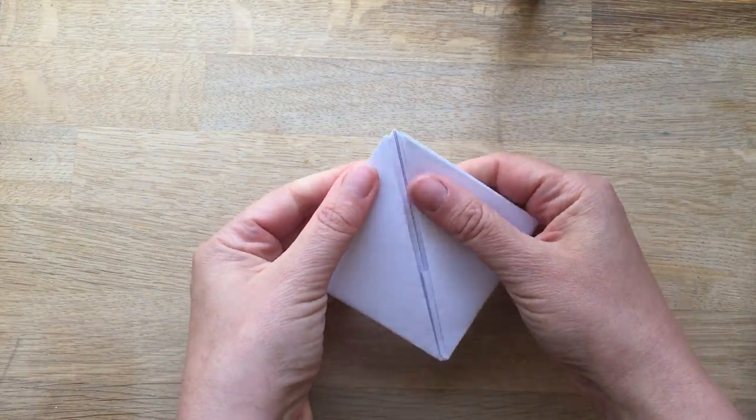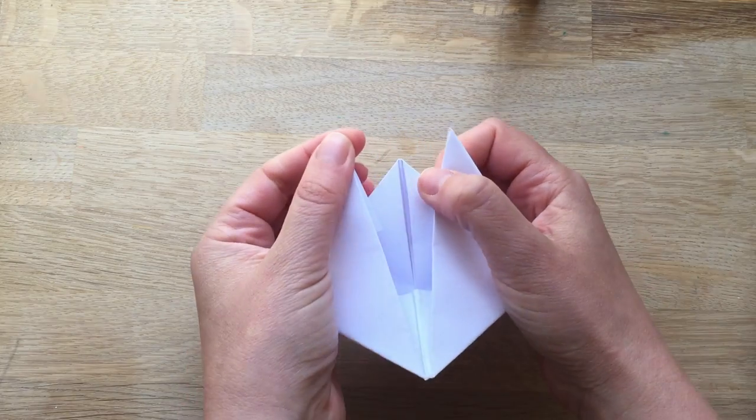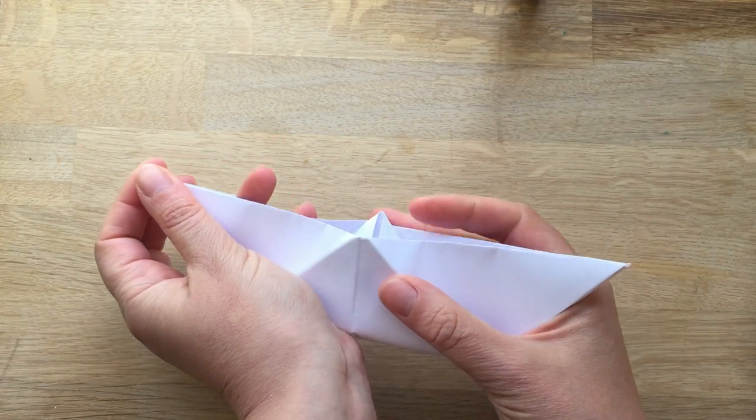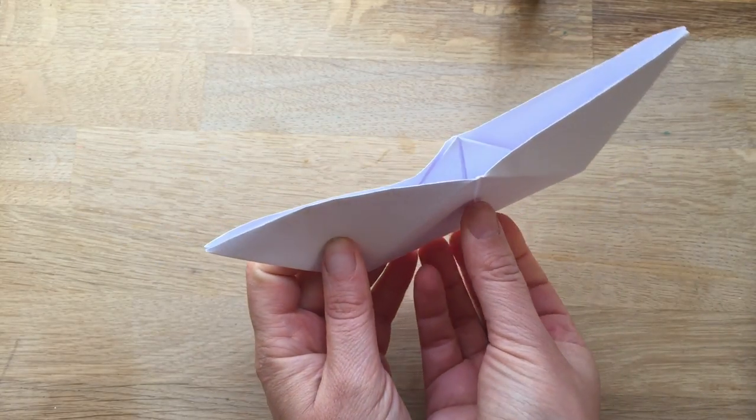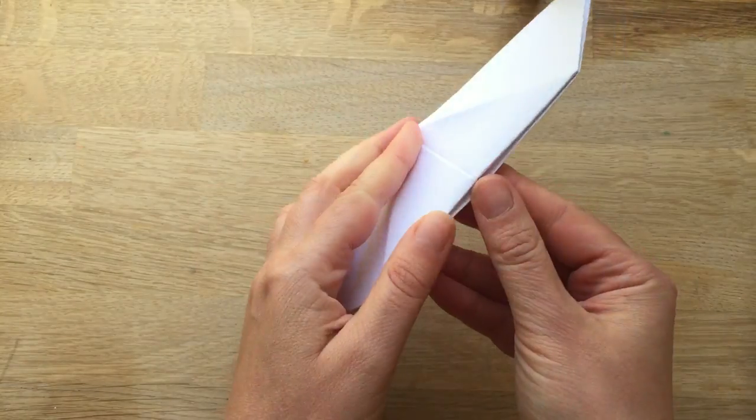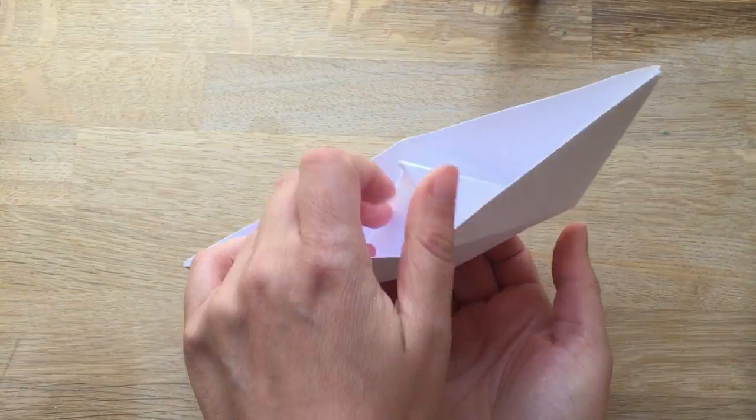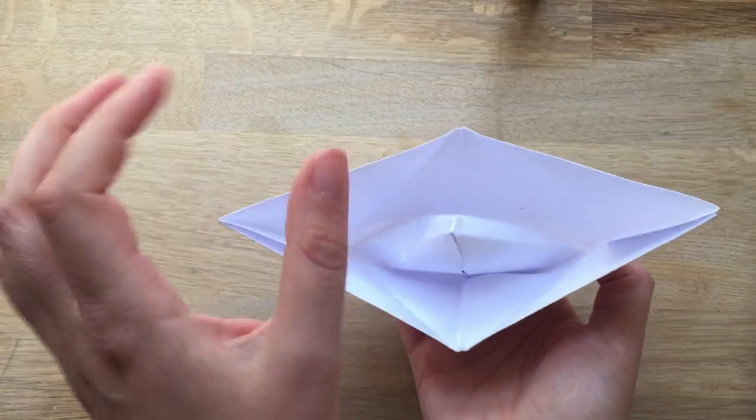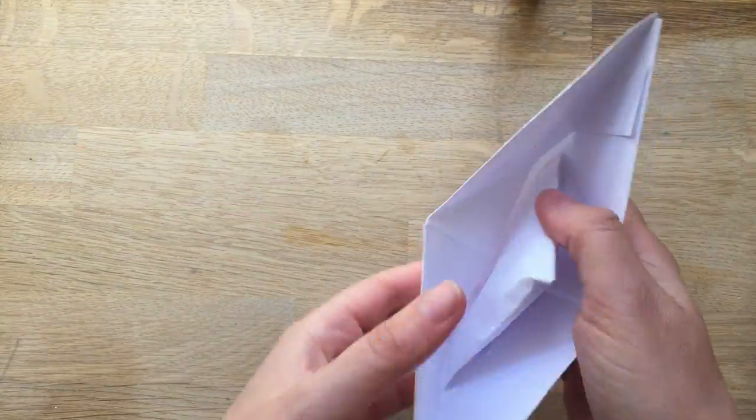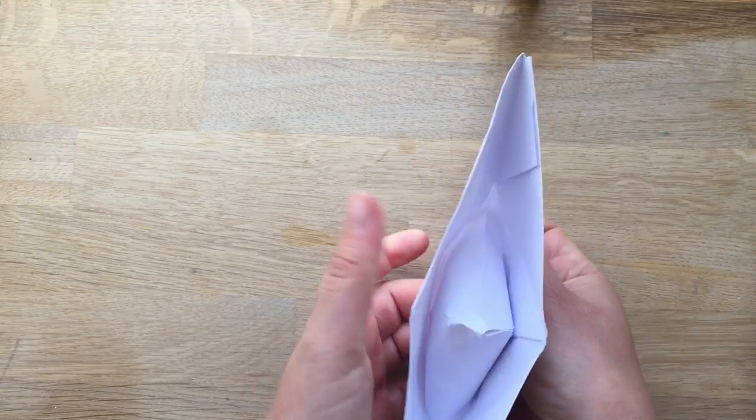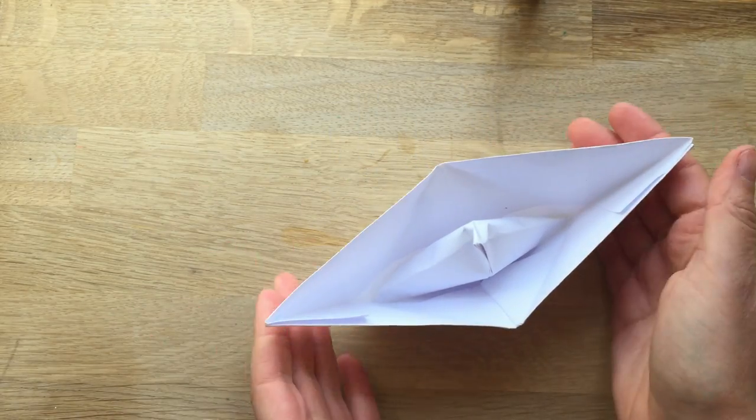...the really magical bit. Very gently pull these apart and ta-da! You have your paper boat. Then you can tuck your fingers in at the bottom like this to give it a bit of shape. You've got your classic paper boat and it'll stand up as well. I think I squashed it a bit.